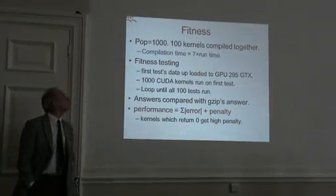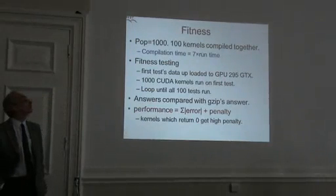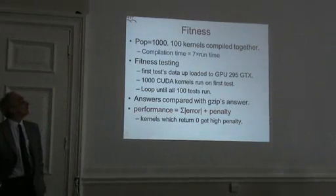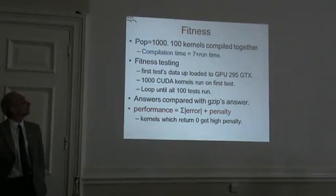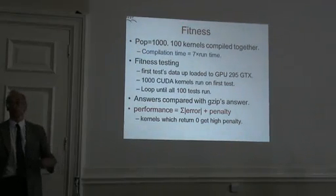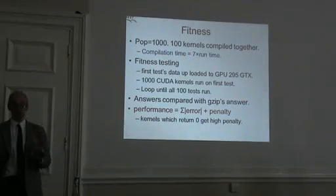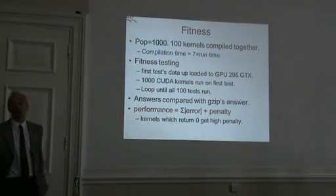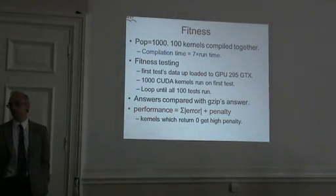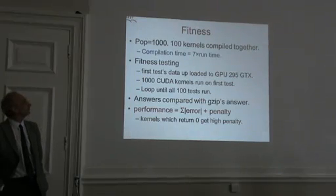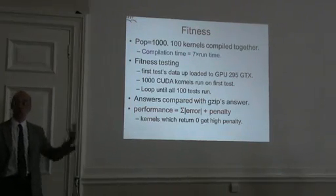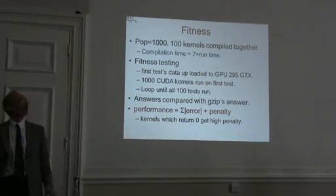The GP has a population of 1,000. For pragmatic reasons, that's broken down into 10 groups of 100 kernels each, and those are compiled together. Instead of compiling one individual at a time, we compile 100 individuals in one go. Even so, the compilation time is about seven times as long as the runtime — by runtime I mean the time to actually pass the compiled code through the test cases.